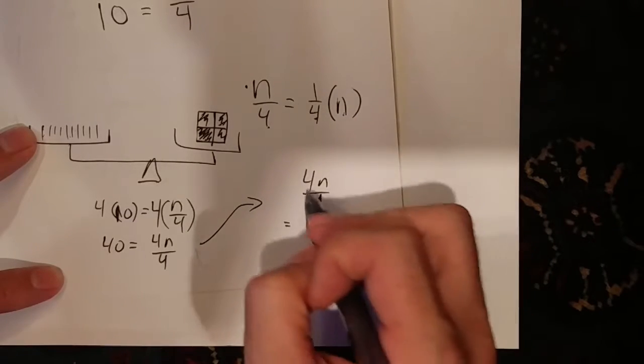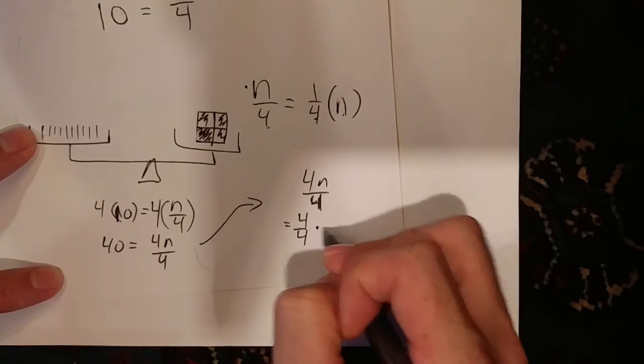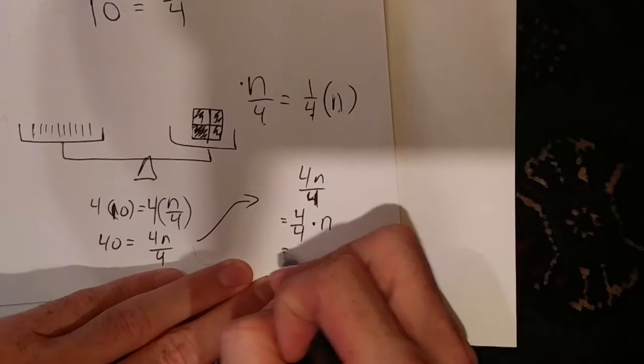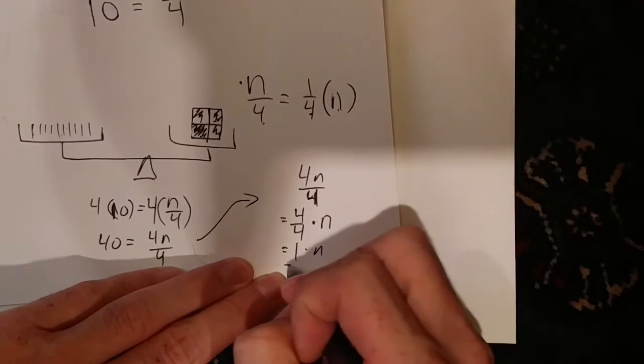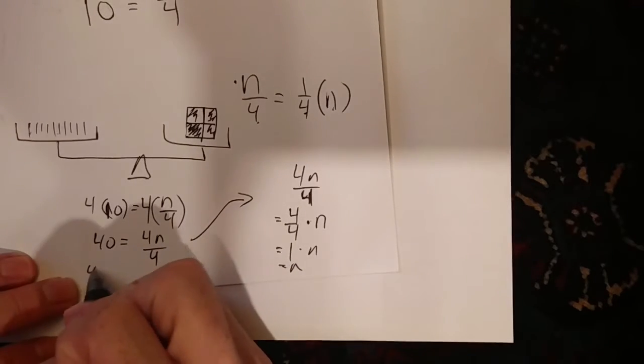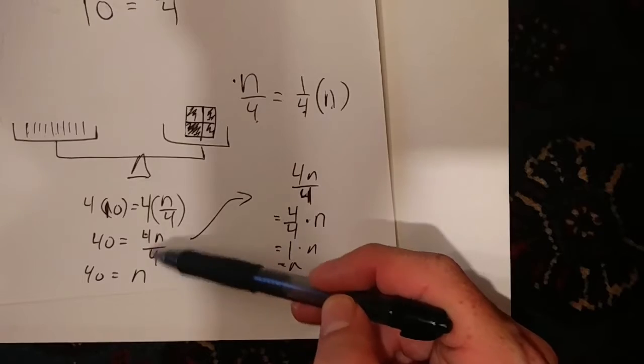So four over four times n, which is the same as one times n, which is the same as n. So all this simplifies down to 40 is equal to n. Or you can just simply remember four divide four is one, this whole thing is one n.